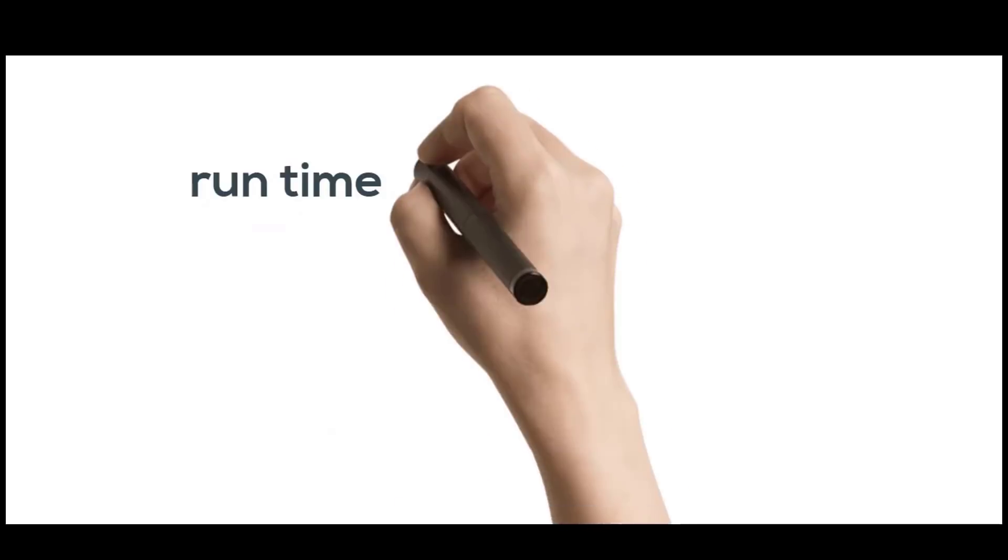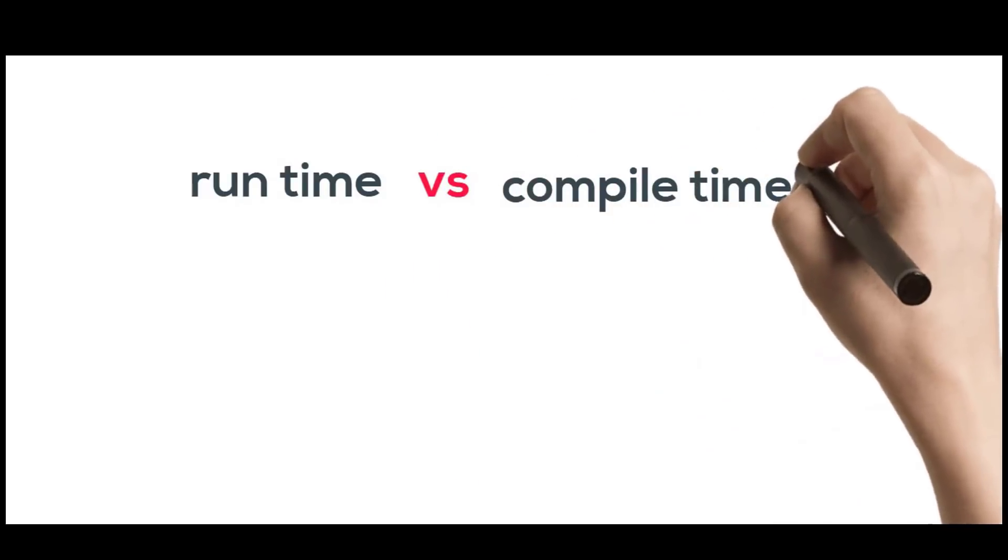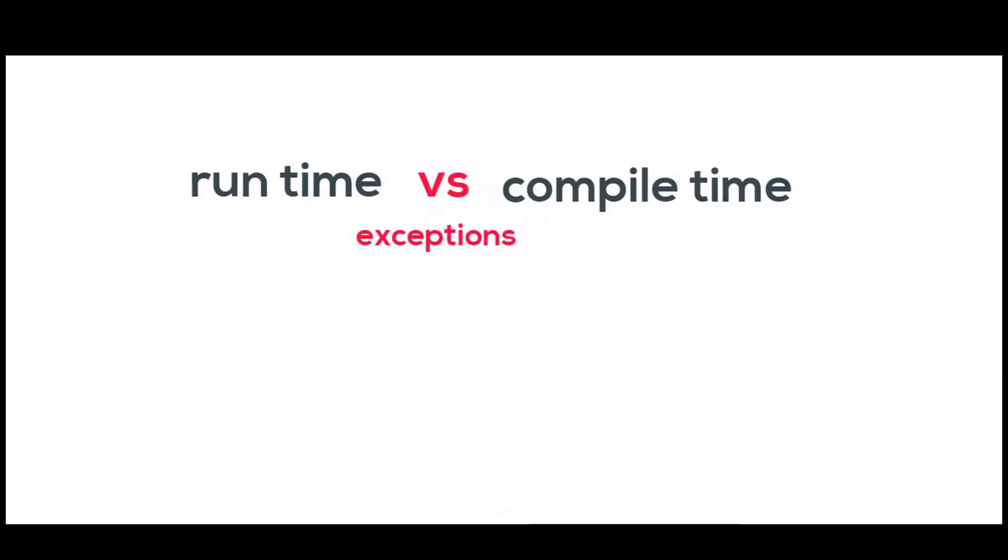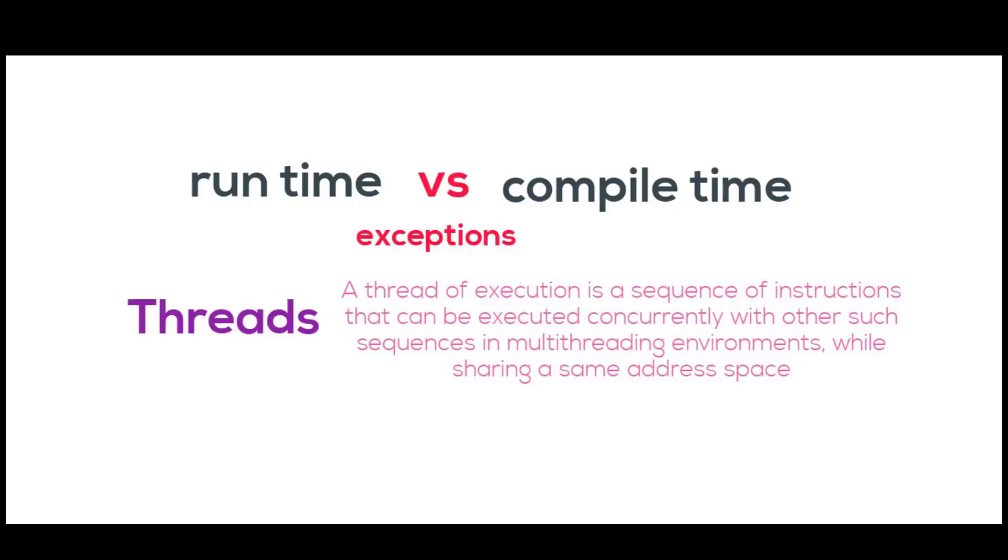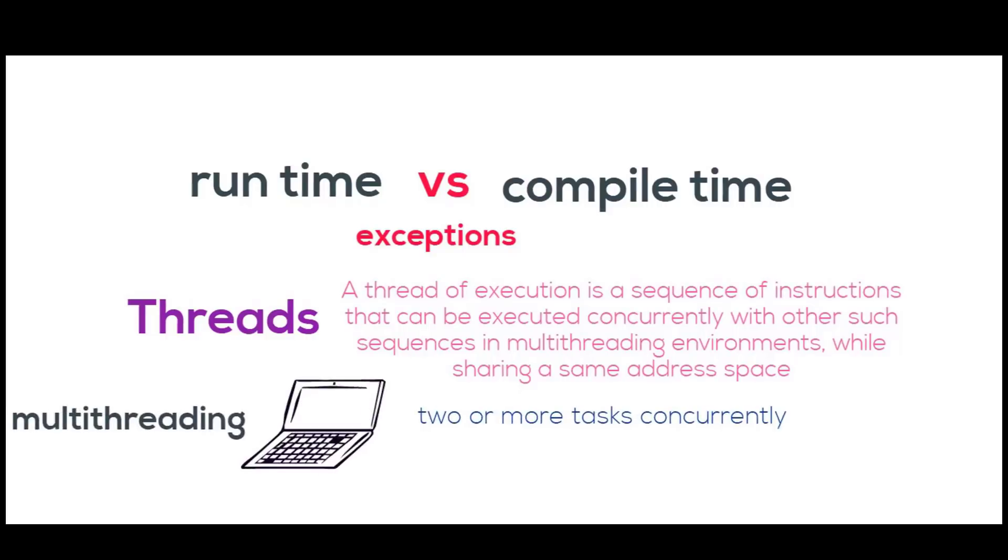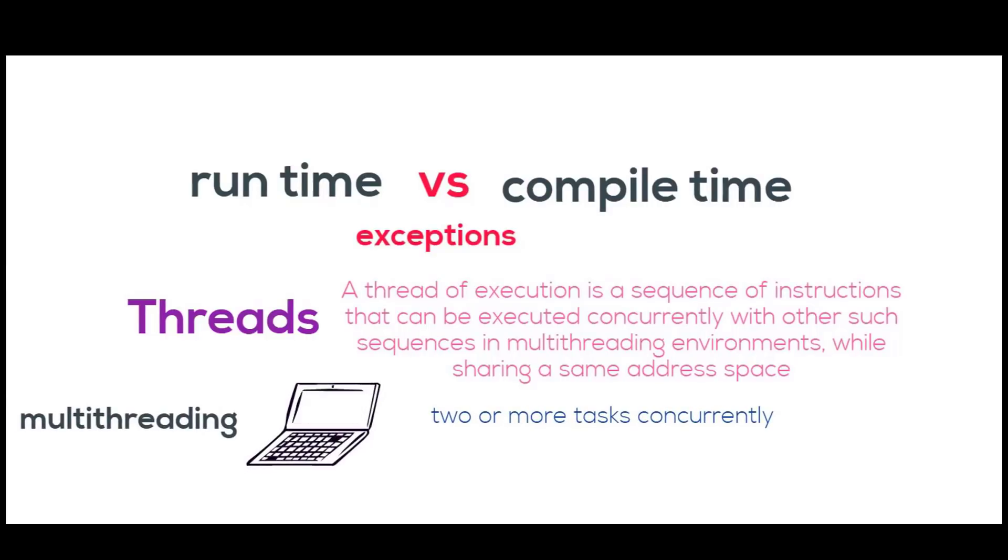In order to understand runtime exception versus compile time exception, we need to have some basic idea of threads. Thread is a single sequence of instruction within a program that can be executed concurrently with other such sequences in the multi-threading environment while sharing the same address. In computer architecture, multi-threading is the ability of CPU to execute multiple processes or threads concurrently.